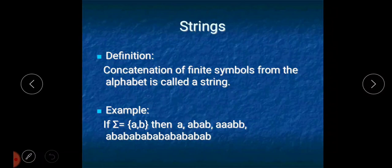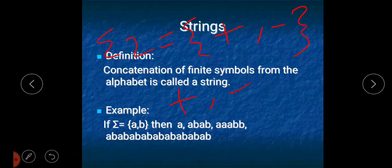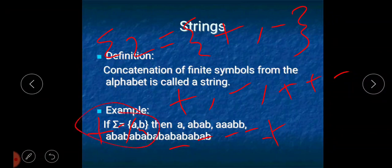Let us look at alphabet2, which contains + and -. What are the valid strings we can define on alphabet2? Just + is valid, just - is valid, and any combination like +-, ++-, ---+, and so on are all valid strings. But if I write + and %, that is not a valid string because + is a member of alphabet2 but % is not.